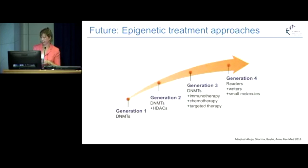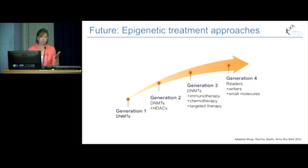Looking at where to next: I've spoken mostly about generation 1 and generation 2 of our epigenetic therapies. Moving forward, there's enormous interest in combining epigenetic therapies with immunotherapy and chemotherapy, and we know that epigenetic therapies seem to stimulate an immune response, which segments well with this idea of combination. With generation 4, there's even more specific targeting — focusing on the readers, writers, and erasers of histone modifications to specifically target those different genes and proteins.